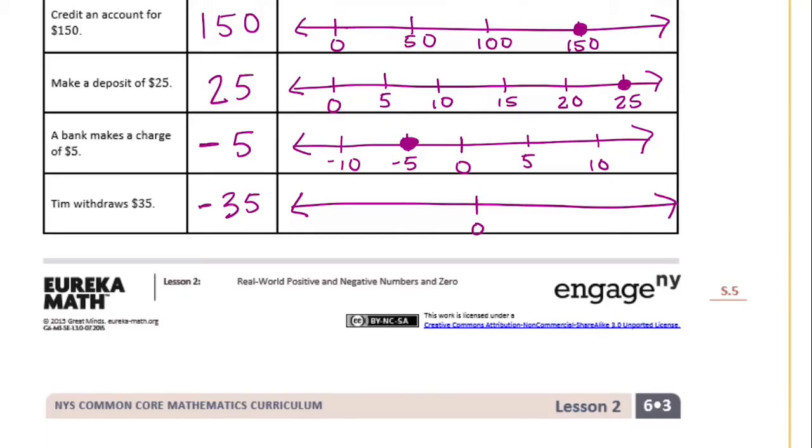So that's zero. I need to make it go a little bit further. So there would be negative 35. I don't need negative zero. Here's negative 35.